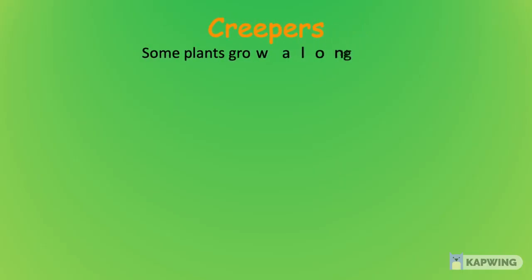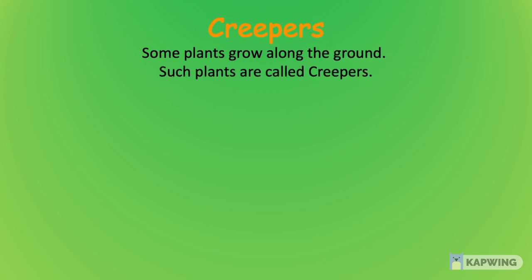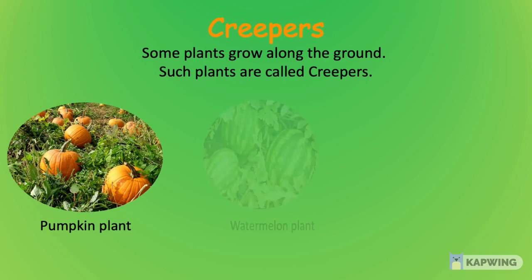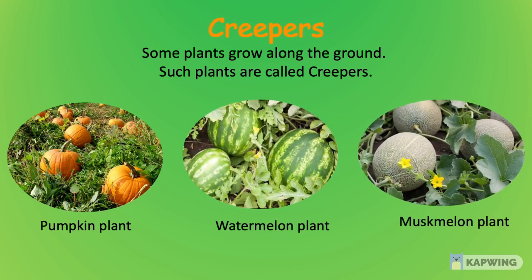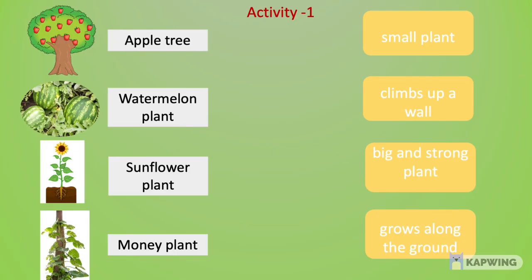Now let's learn about creepers. Some plants grow along the ground — such plants are called creepers. For example, we have pumpkin plant, watermelon plant, muskmelon plant, etc. In this activity, let us match the plants with their features.